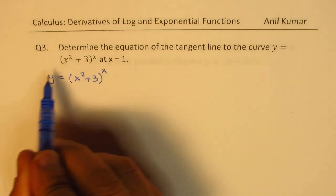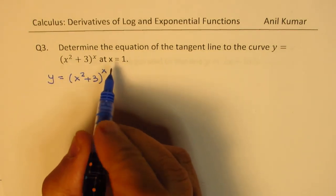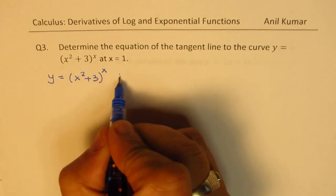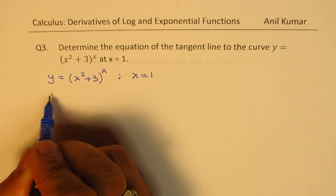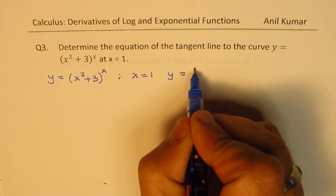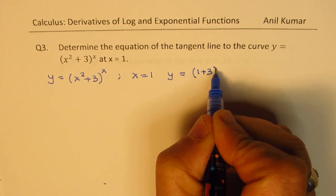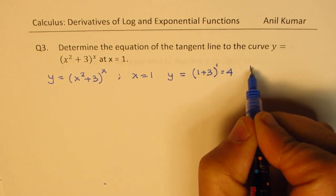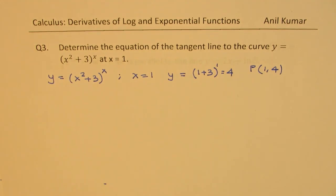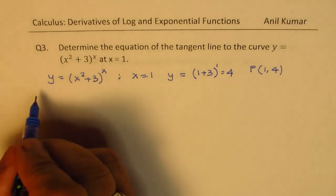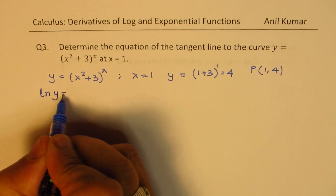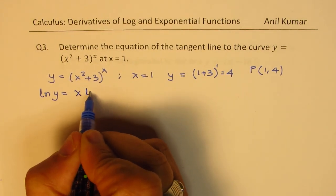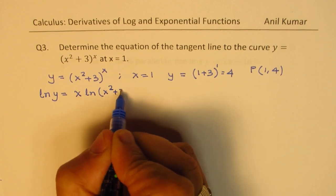Let us also find the value of this function at x equals 1. If we write x equals 1, then y equals (1 plus 3) to the power of 1, which is 4. So we are talking about the point (1, 4). That is the point we will be working with. To move further, let us take logarithms on both sides. So ln y equals x times ln(x squared plus 3).